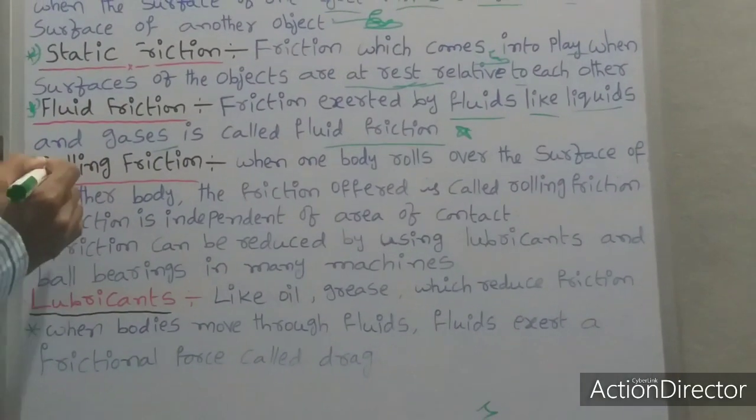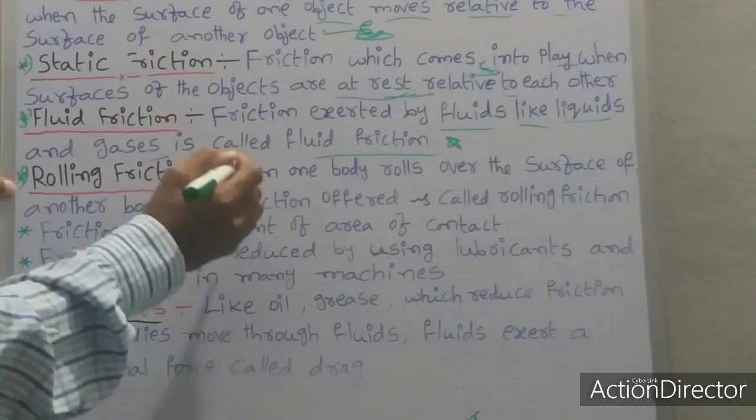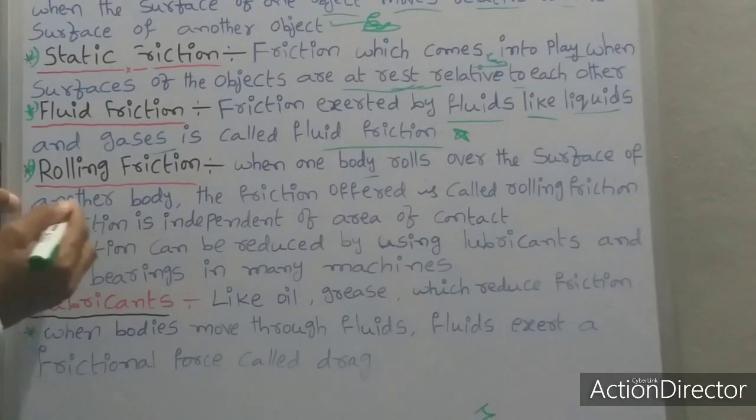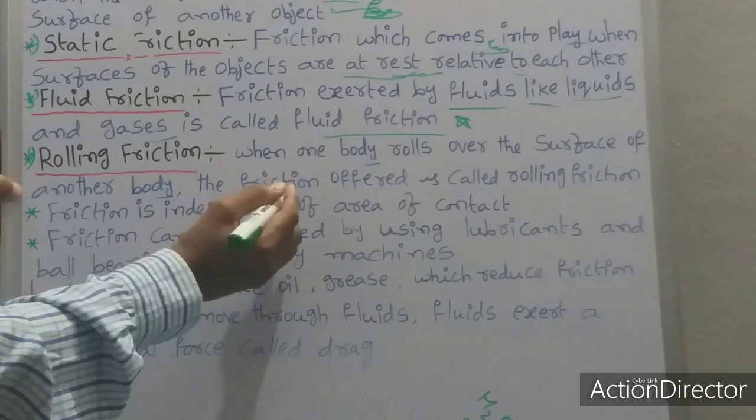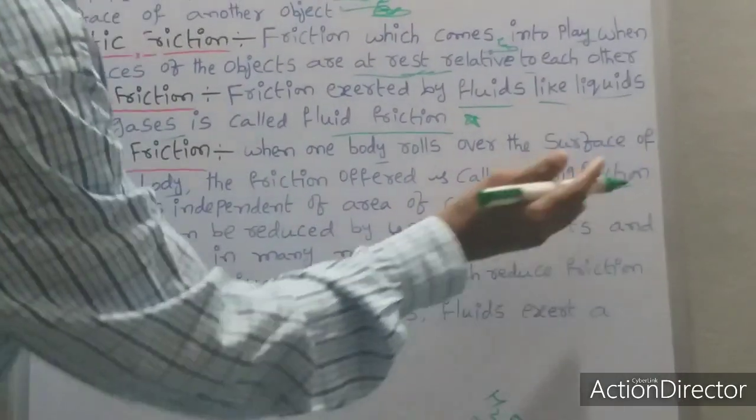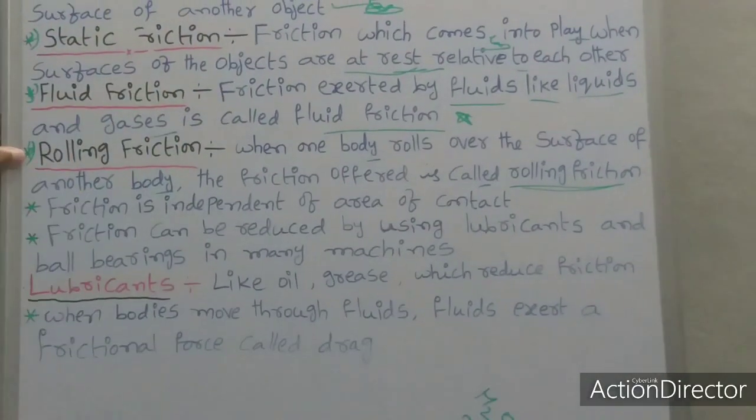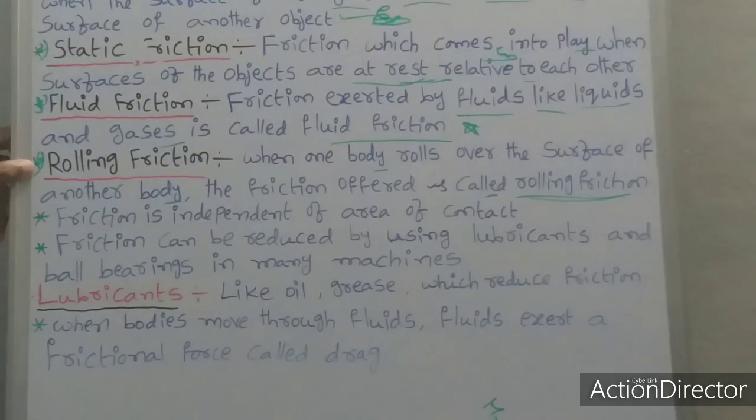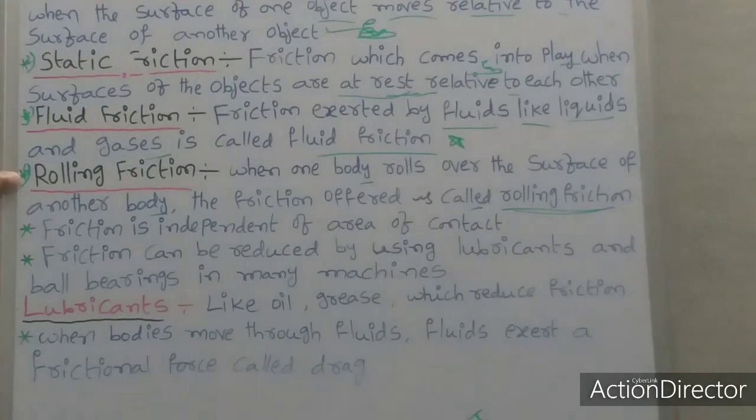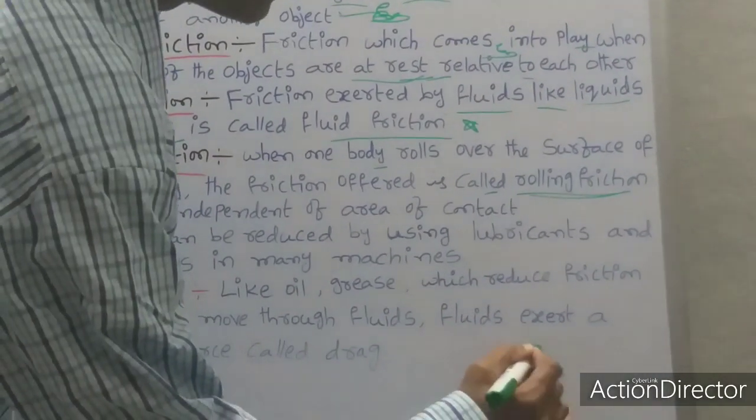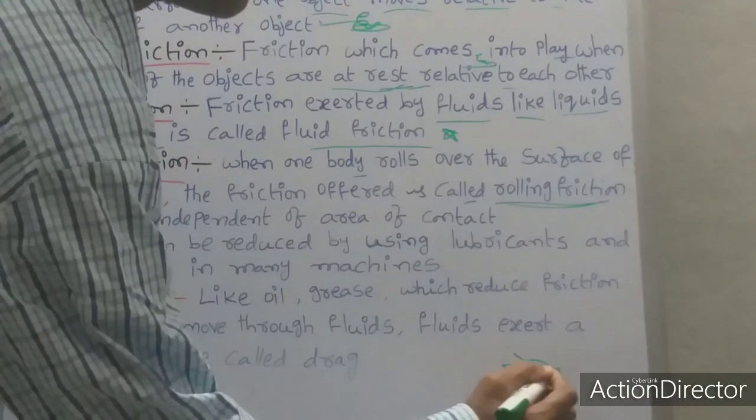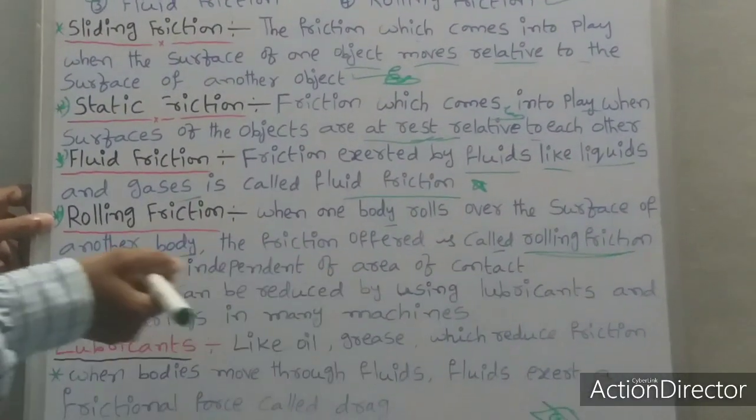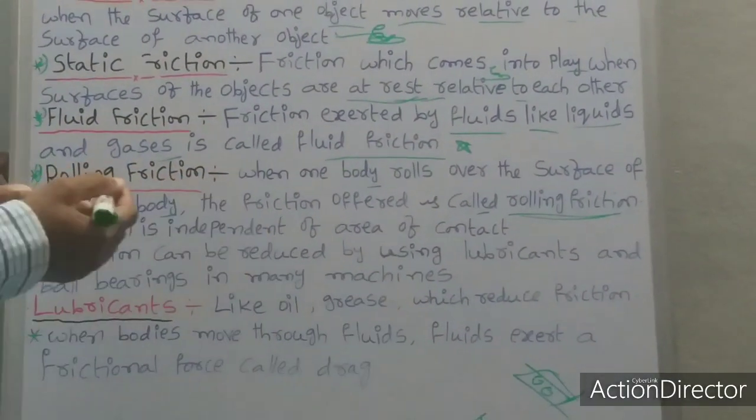Last one students, fourth one, rolling friction. Definition: when one body rolls over the surfaces of another body, the friction offered is called rolling friction. Rolling friction example students: it is easy to pull a suitcase which has rolling ball bearings. Bus, railway station, some persons carry bags on their back. That is the best example.